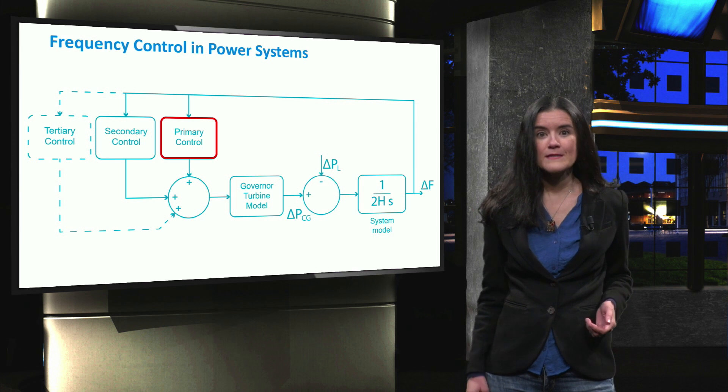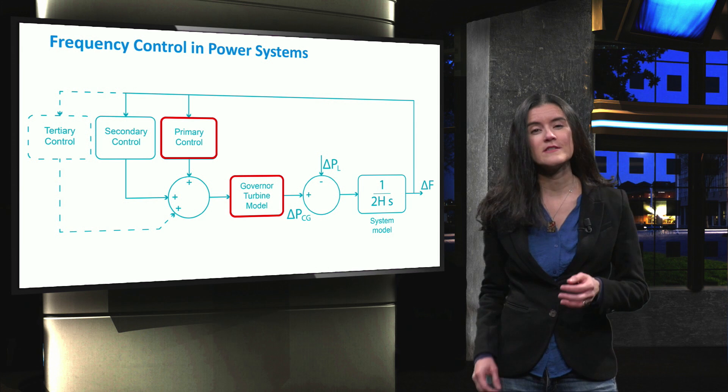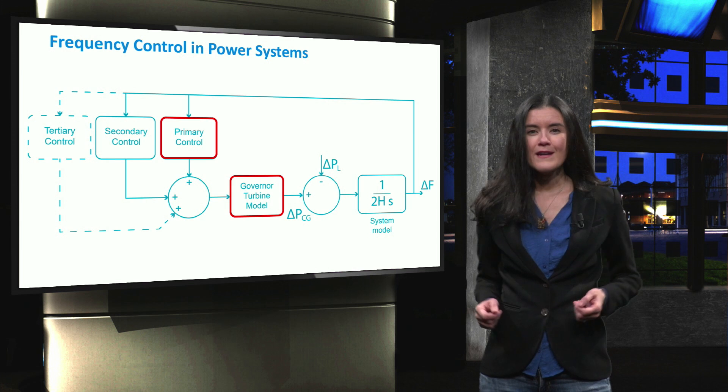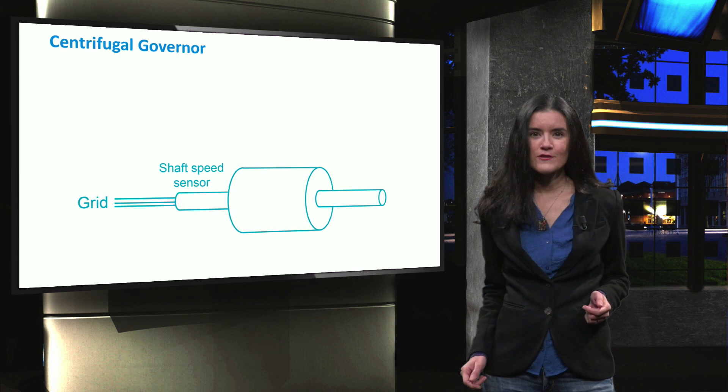In a traditional power system, the speed governor adjusts the speed of a machine by regulating the amount of fuel that is supplied to it. To understand this better, let's look at the governor turbine model.